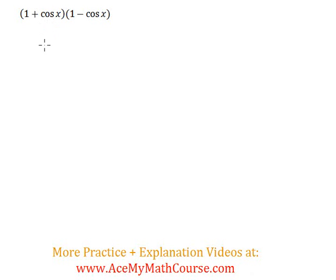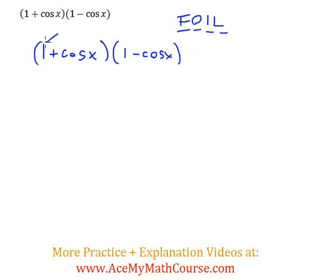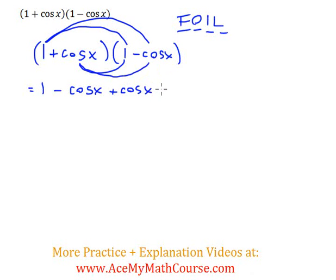So I'm going to get started by just expanding this through FOIL, right? First, outside, inside, last. So 1 times 1 is 1. 1 times negative cos of x or minus cos of x is just minus cos of x. Cos x times 1, cos x. And cos x times negative cos of x is negative cos squared of x.